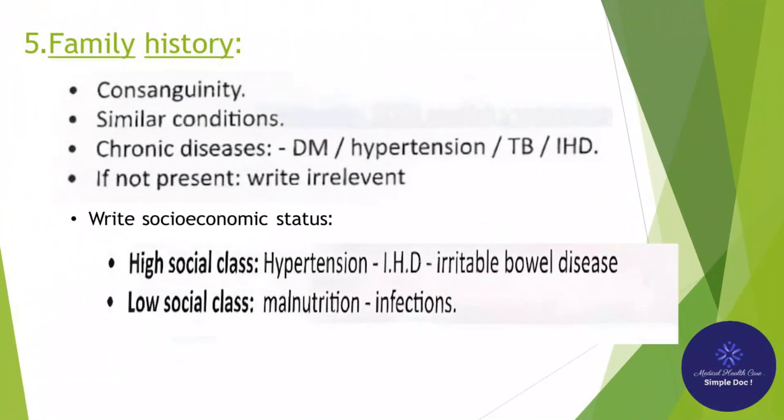5. Family history: ask about consanguinity, similar conditions, and chronic diseases such as DM, hypertension, and IHD. 6. Socioeconomic state: high social class is associated with hypertension, IHD, and irritable bowel disease; low social class is associated with malnutrition and infection.